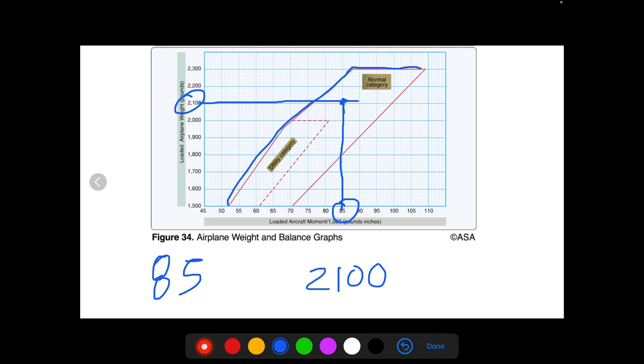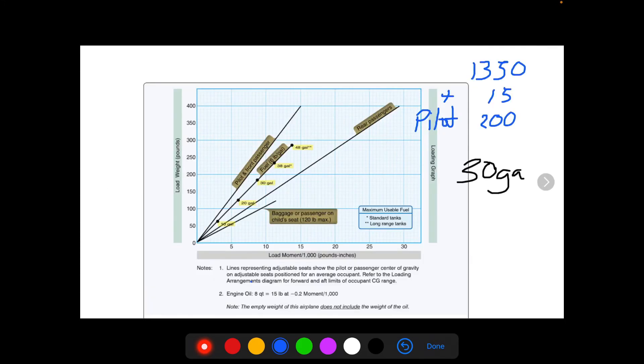And our CG is clearly within the bounds of the normal category. So if our aircraft was in the normal category, we would be safe to fly as our CG is right in the middle of those boundaries.